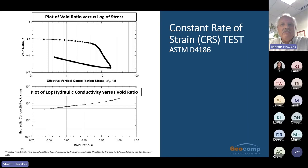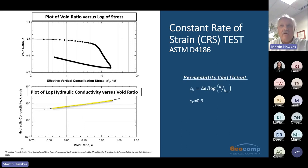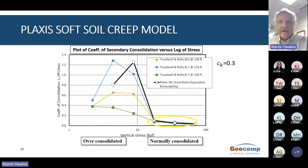This slide shows the results of a constant rate of strain test performed by Arup on a sample of the Old Bay clay at a depth of 116 feet. In the constant rate of strain test, the load is increased at a constant rate and hydraulic conductivity can be calculated and plotted versus void ratio. The figure shows how hydraulic conductivity decreases with decreasing void ratio. Plaxis has a permeability coefficient, CK, that makes permeability vary with void ratio. Using data from CRS tests, we determined a value of about 0.3 is appropriate. The updated coefficient of consolidation versus vertical stress with CK equal to 0.3 shows a much better match in the normally consolidated range.